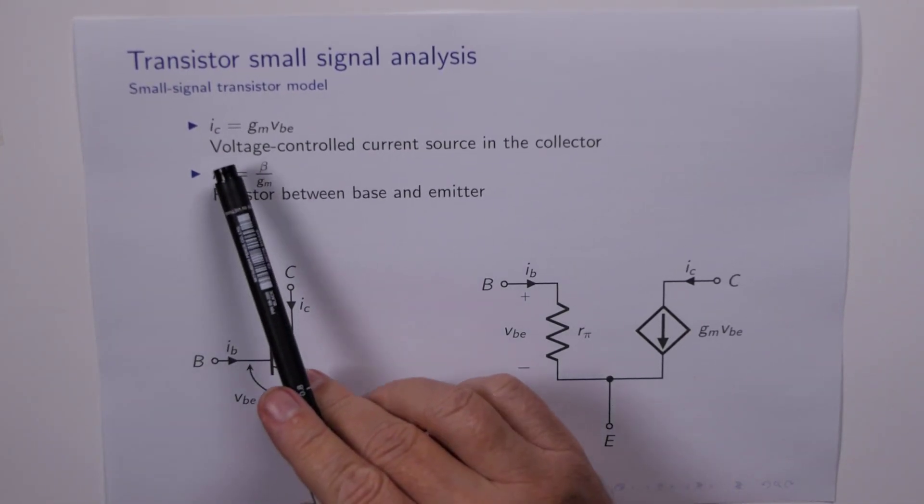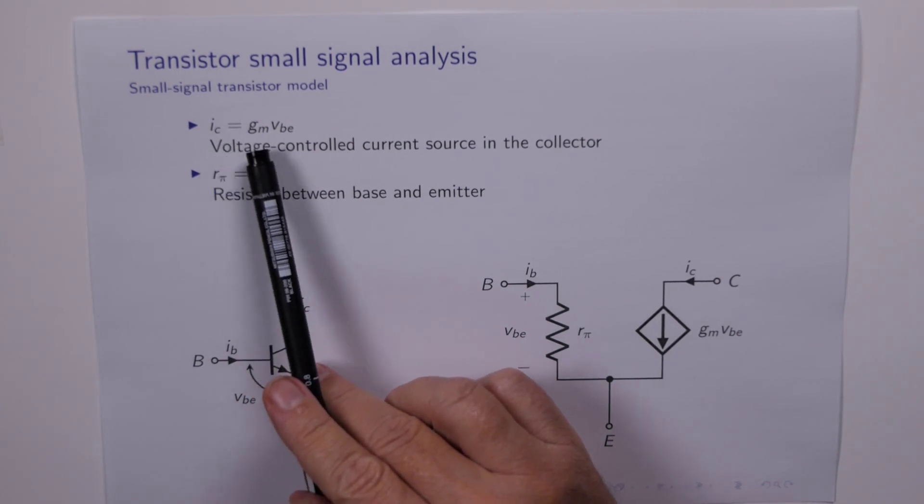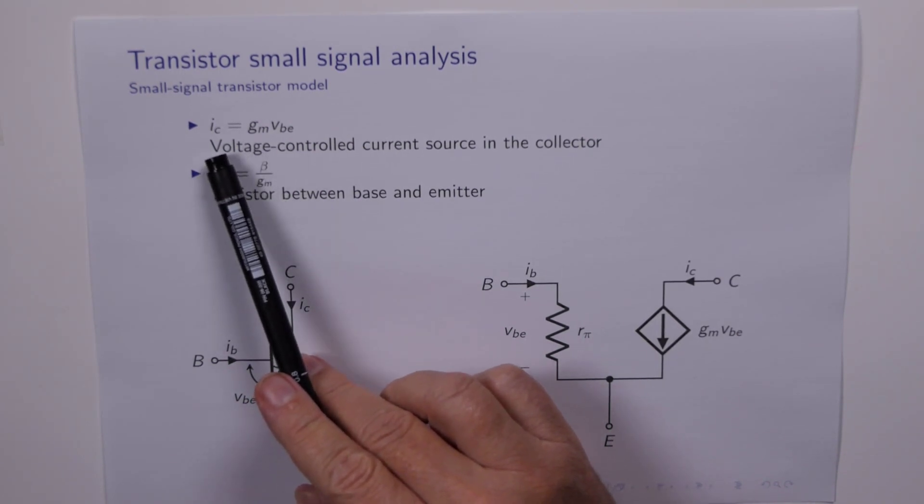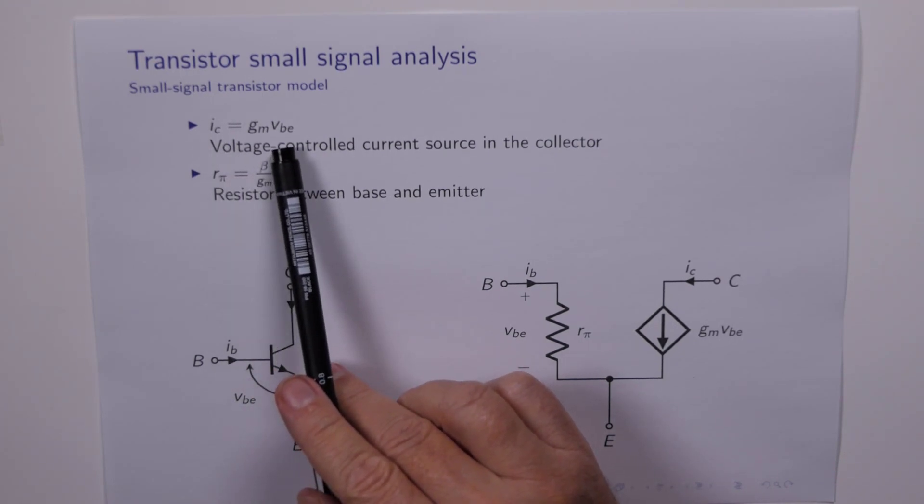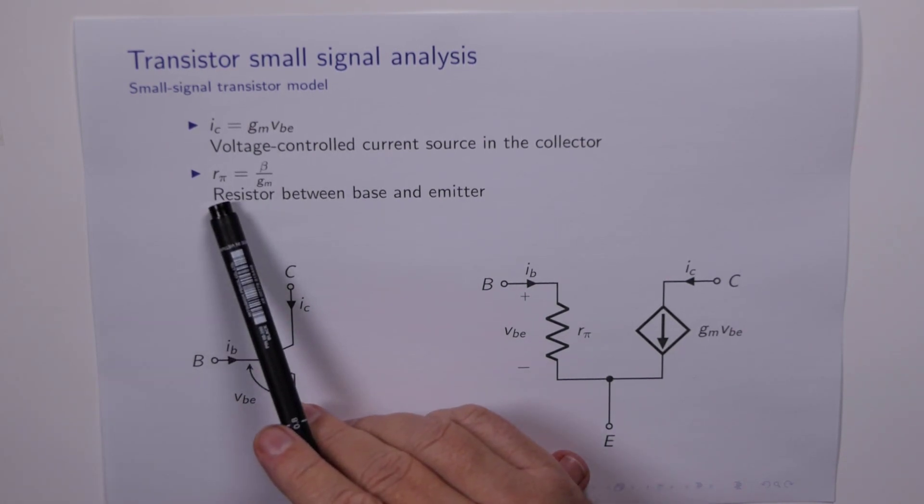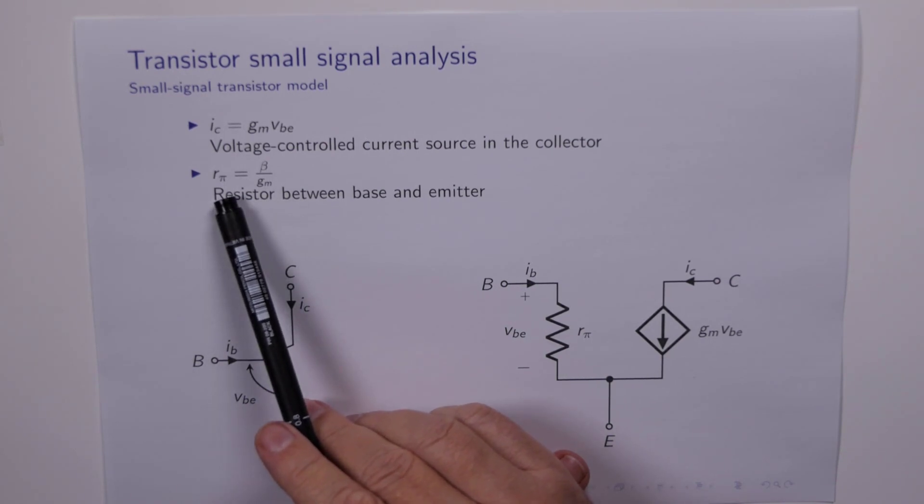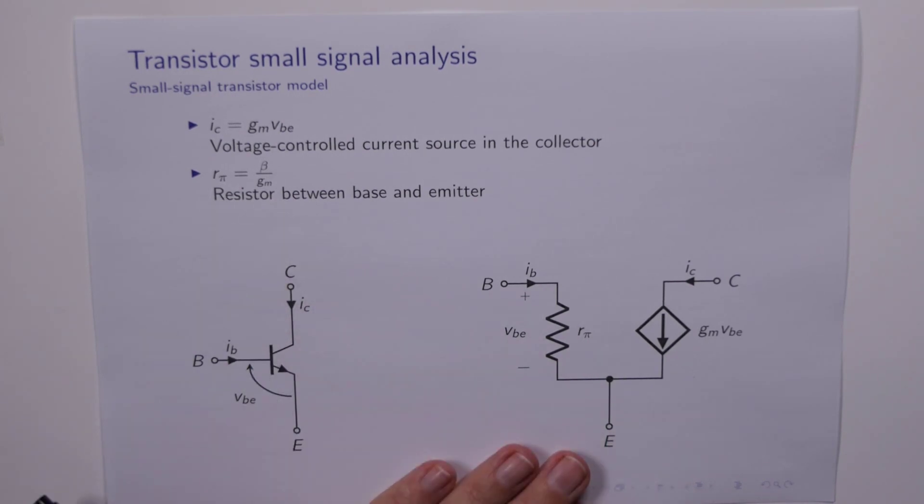So here's the first relationship. We've got the linear connection between the collector current and the base emitter voltage. This suggests that the collector current is controlled by the base emitter voltage. So why don't we make the collector current equal to a voltage controlled current source. R pi was simply the resistance looking into the base and emitter terminals, so why don't we put a resistor in there.